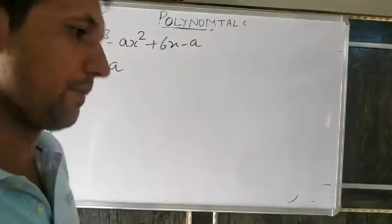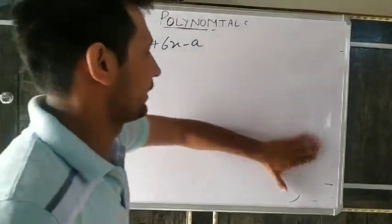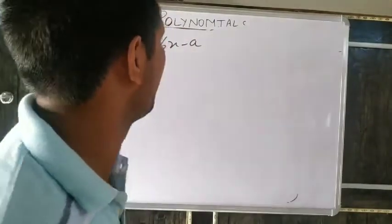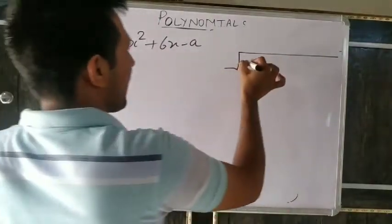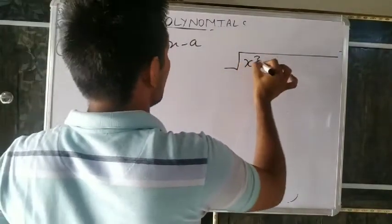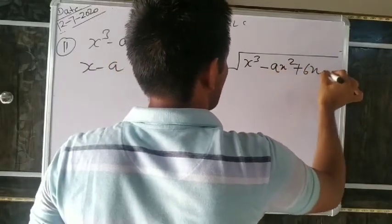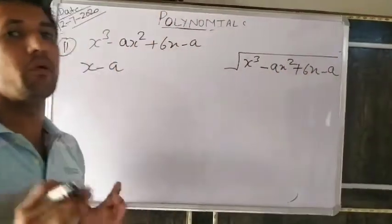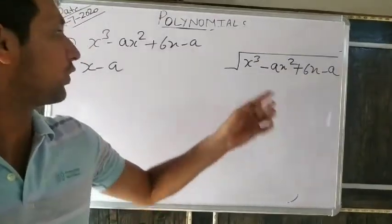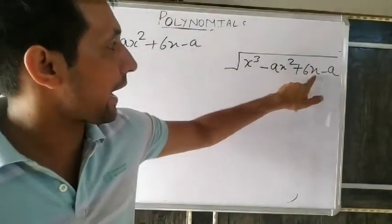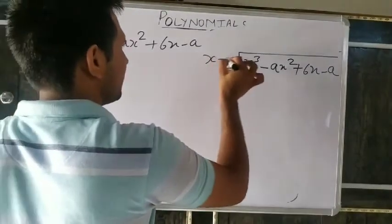Remainder theorem is deleted from the syllabus. So we will divide using the long division method. Always write all exponents in decreasing order: x³ − ax² + 6x − a, divided by x − a.